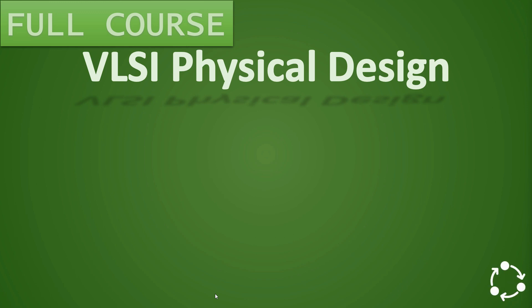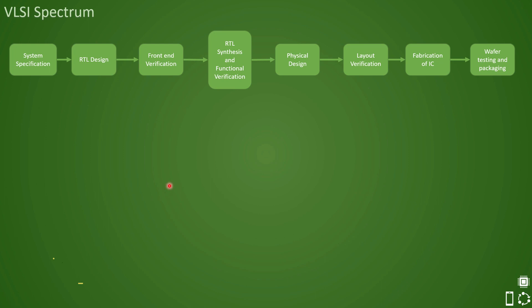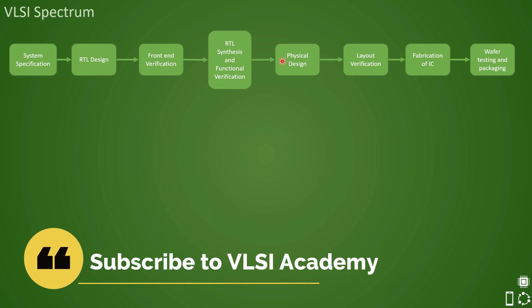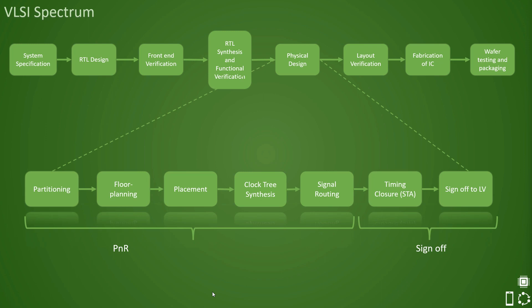Hi everyone, welcome to VLSI Academy. This is a lecture on placement-related concepts and today we will understand about placement of standard cells. So far we have seen what inputs are needed to start the physical design process and how we create the library. Once the library with all inputs is created, the design is started with the floor planning exercise, in which we have seen details about pin placement, macro placement guidelines, and other information. Once the floor plan is done, we take the database forward to the placement stage.